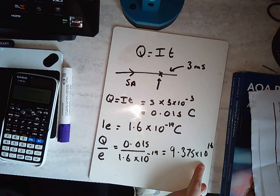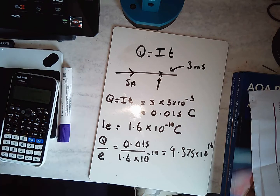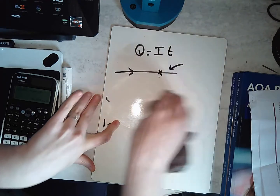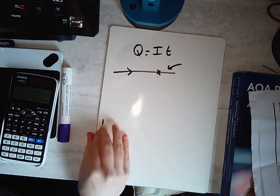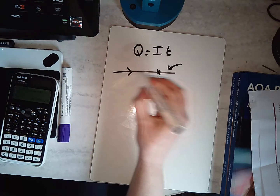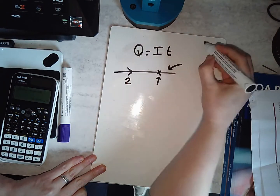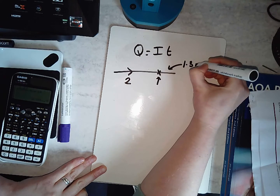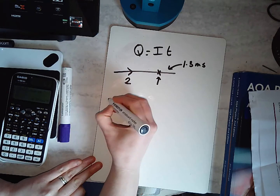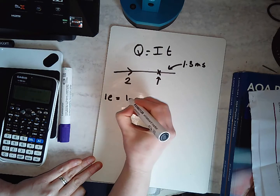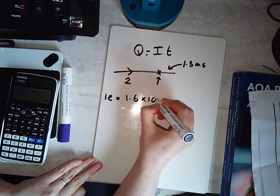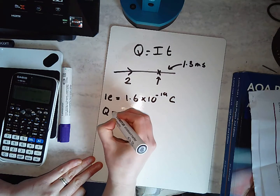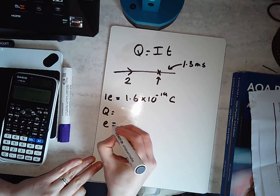It should always be a big number — it should always be a lot. So let's change it up and have you work this from scratch. I've got a different situation: 2 amps, and I want to know how many electrons pass this point in 1.3 milliseconds. The charge of one electron is 1.6 times 10 to the minus 19 coulombs. Work out how much charge is at that point and then tell me how many electrons passed that point.